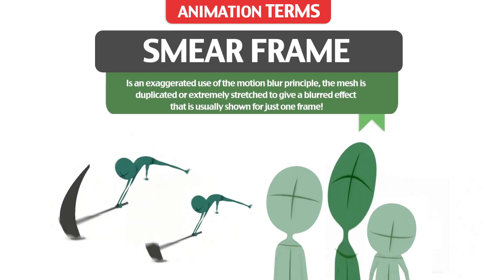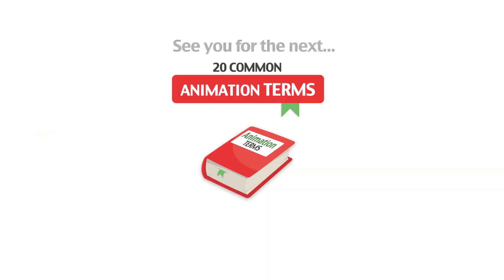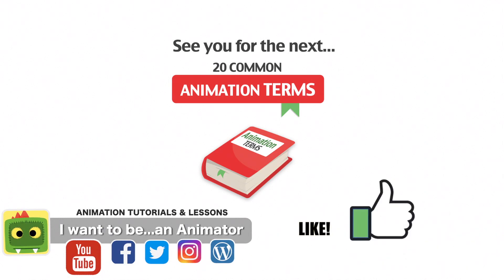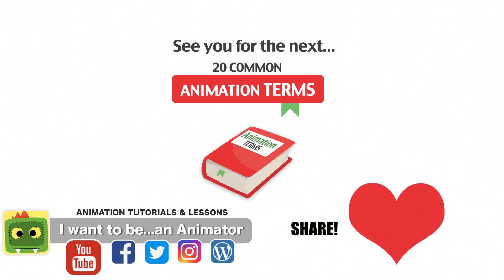Smear Frames: it's an exaggerated use of the motion blur principle. The mesh is duplicated or extremely stretched to give a blurred effect that is usually shown for just one frame. That's all for these 20 common animation terms. Subscribe to the channel and support this project of free animation lessons and tutorials by giving a like and sharing the videos.